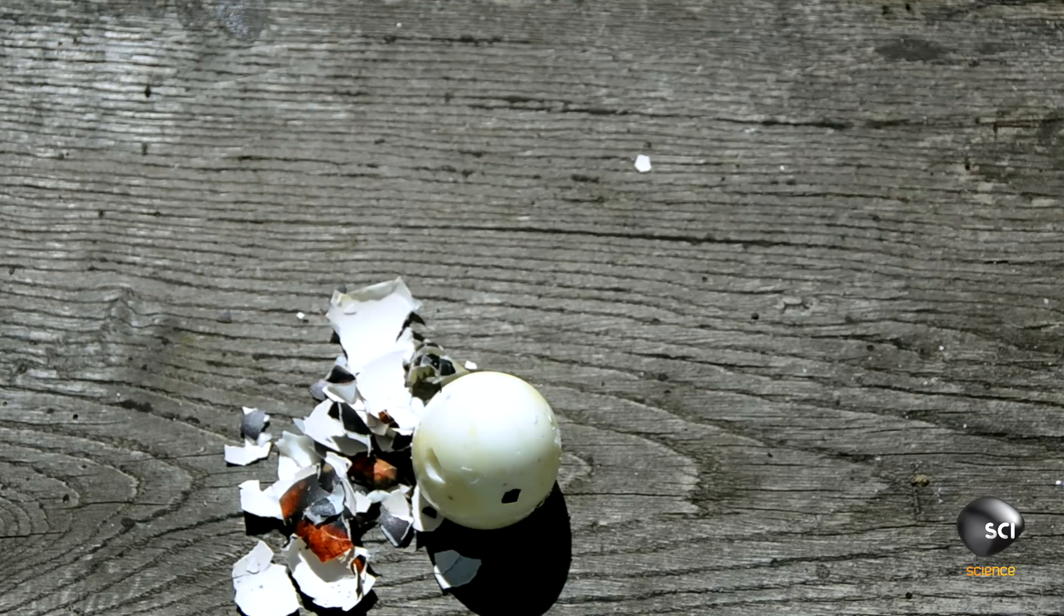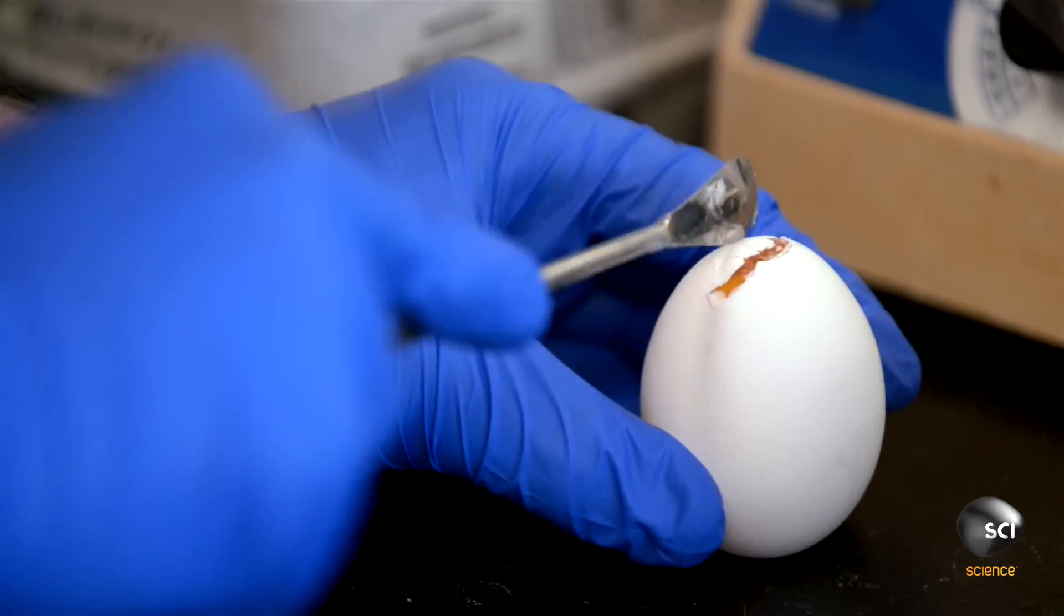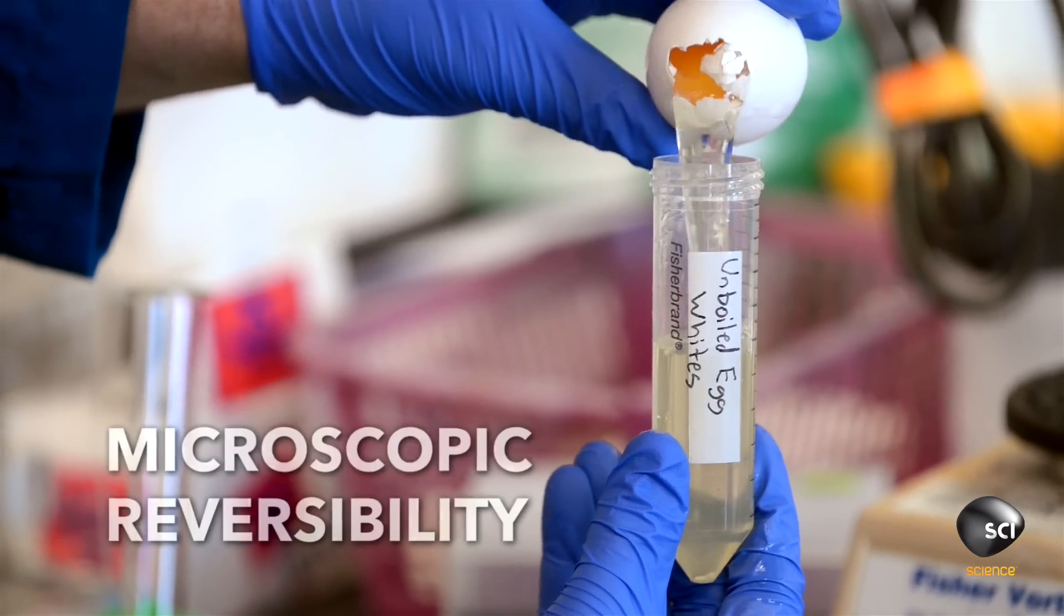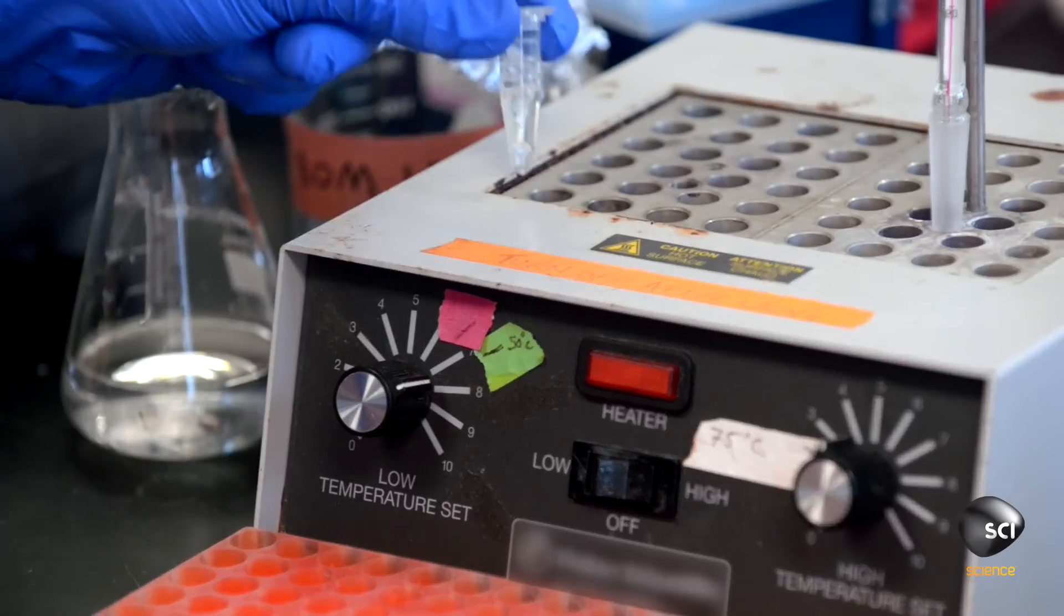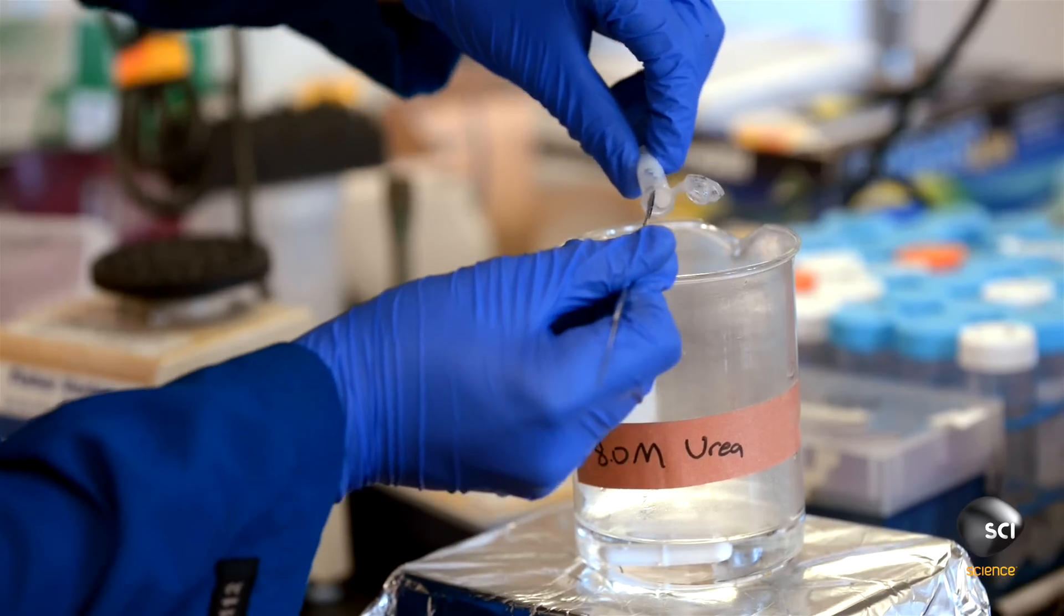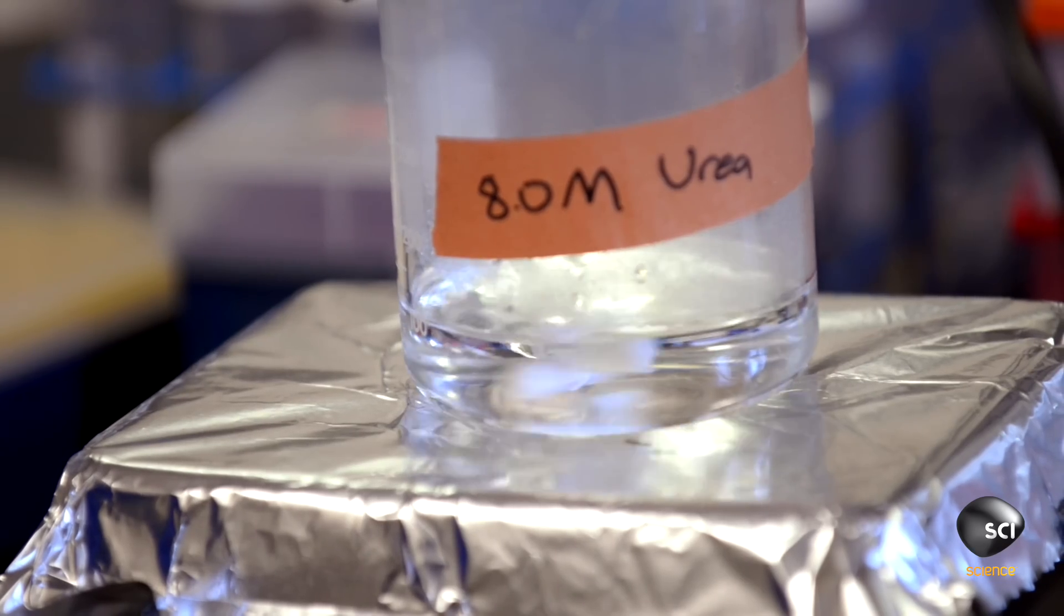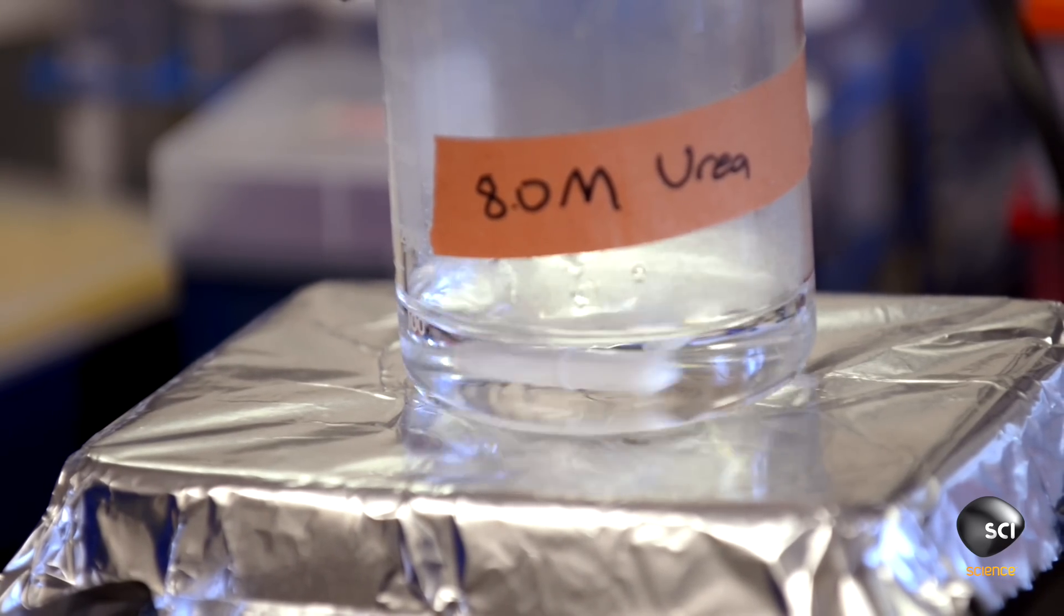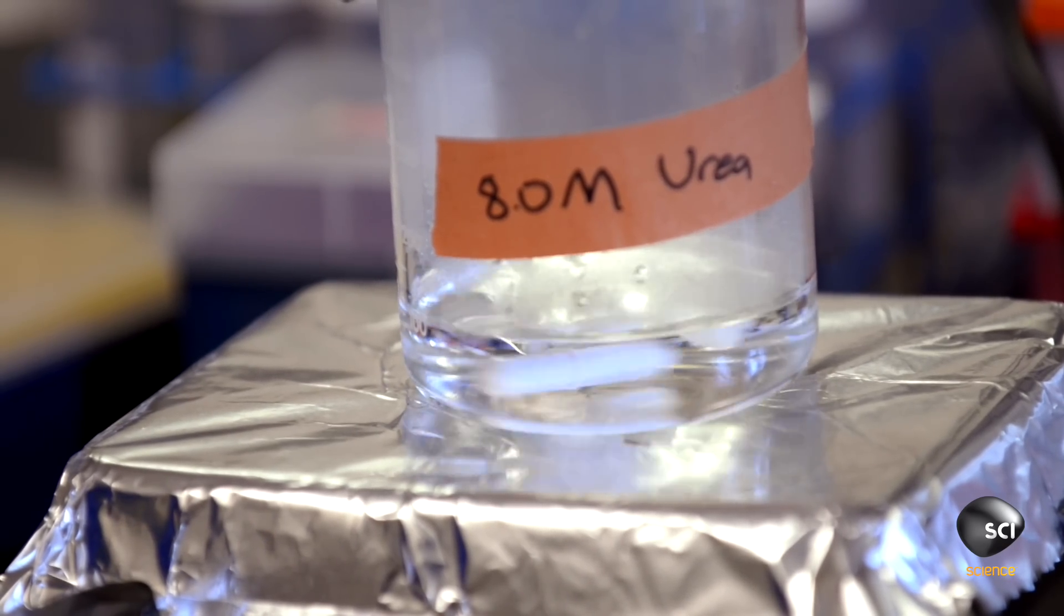So, how do you unboil a hard boiled egg? Using the principle of microscopic reversibility, that's science speak for anything done can be undone, you dissolve the boiled egg white in urea, a chemical that lubricates and separates the clumped up proteins, causing them to shift around.